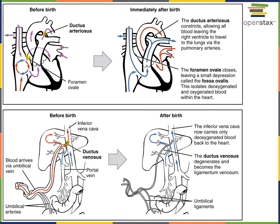Similarly, the foramen ovale will close after birth, leaving only the small remnant known as the fossa ovalis — an indentation in the surface of the right atrium.